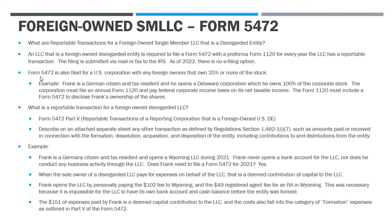Form 5472 can also be filed for U.S. corporations with foreign owners that own more than 25% of the stock. For example, if we have Frank — a German citizen — and he opens a Delaware Corp and owns 100% of the stock, the Delaware Corporation is a U.S. tax resident. So it has to file a Form 1120, compute its federal taxable income, pay federal corporate income taxes, and then within the 1120, they attach a 5472 to disclose Frank's ownership of the shares and any reportable transactions.